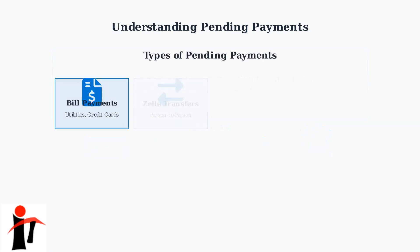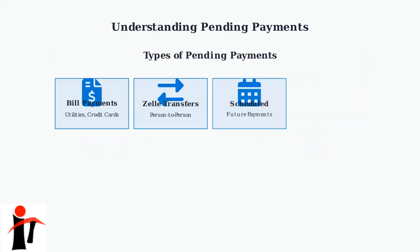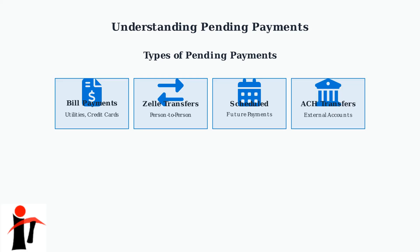There are four main types of pending payments you might see in your Chase account: bill payments to utilities and credit cards, Zelle transfers for person-to-person payments, scheduled future payments, and ACH transfers to external bank accounts.